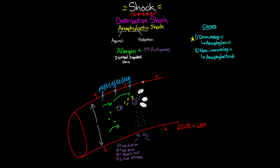With the H2 receptor site, you're going to see an increase in gastric acid production, leading to a buildup of gastric acid. This could cause nausea, vomiting, and ultimately an aspiration risk. The other H2 response is vascular smooth muscle relaxation, which further decreases our systemic vascular resistance and ultimately leads to a further decrease in blood pressure. That's essentially what's happening with the immunologic response.